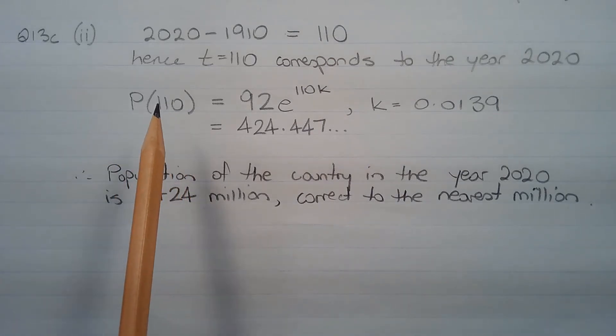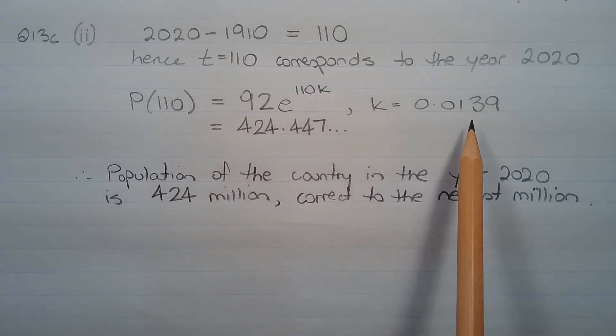Now we want P(110), which represents the population of the country in the year 2020. So P(110) = 92e^(110k), where k = 0.0139 from Part 1, and this evaluates to 424.447 and so on.